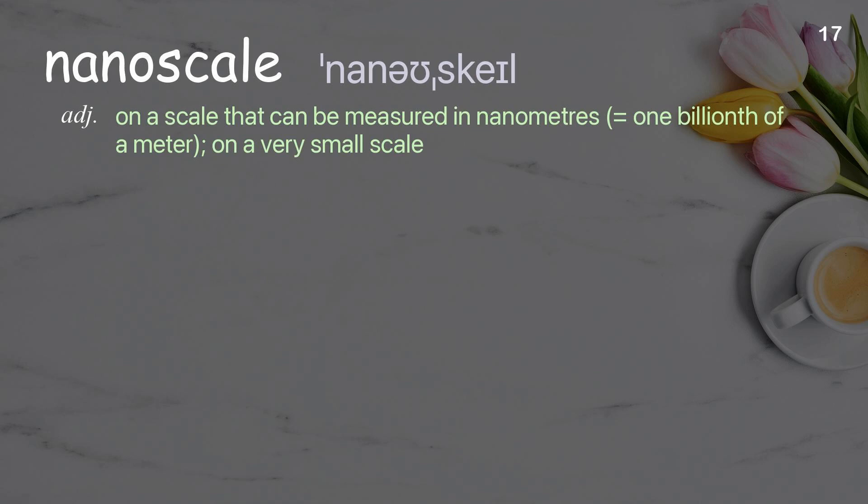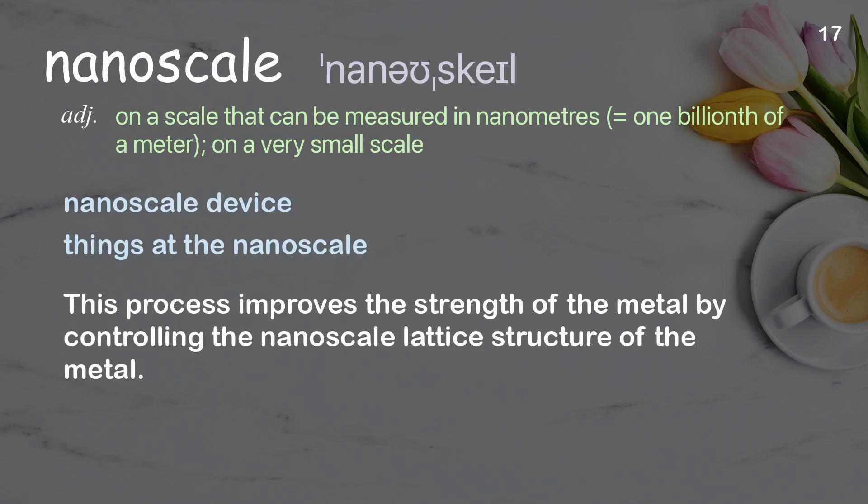Nanoscale: on a scale that can be measured in nanometers — one billionth of a meter; on a very small scale. Examples: nanoscale device, things at the nanoscale. This process improves the strength of the metal by controlling the nanoscale lattice structure of the metal.